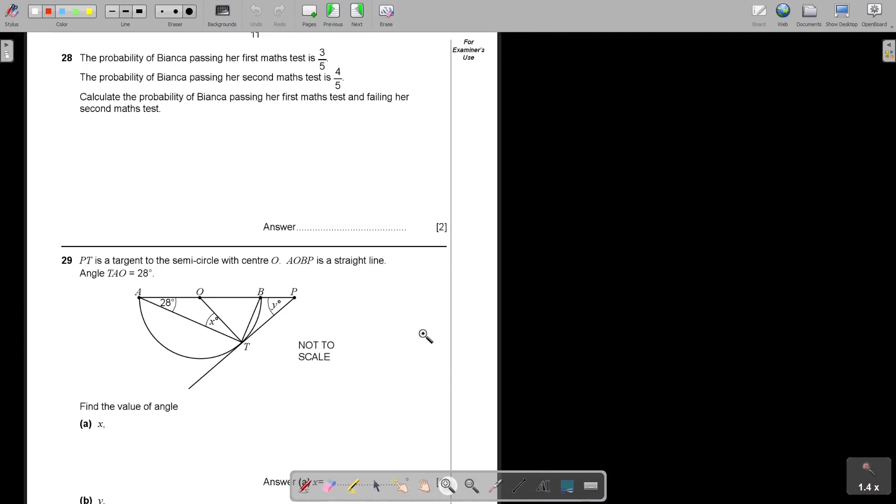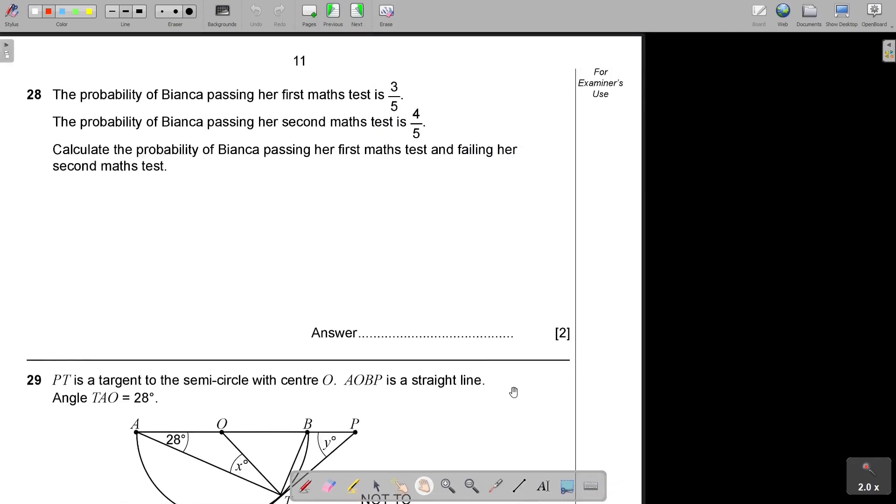Let's go back to the question paper. And do the next page. And again, I'm going to give you a reference page in the textbook. So, if you go to page 645 and you go to example 14, that is going to help you. This is probability. And this is a bit more difficult because it's not one event. It's more like extended type of work. It's two events. So, the probability of Bianca passing her first maths test is 3 over 5. The probability of Bianca passing her second maths test is 4 out of 5.